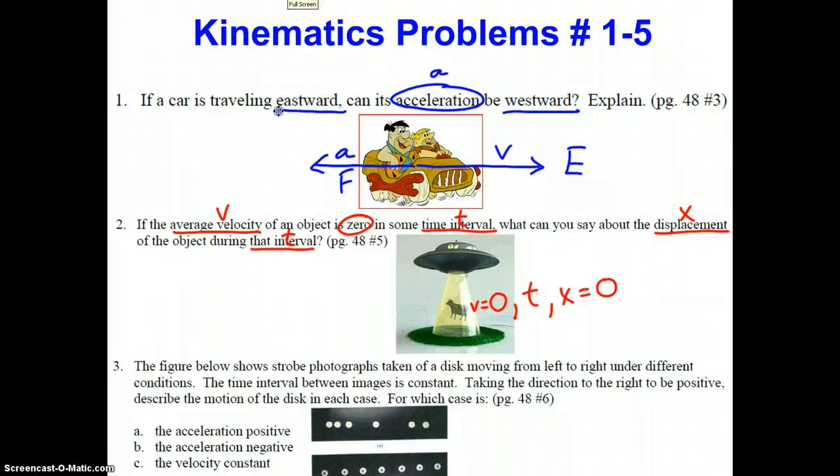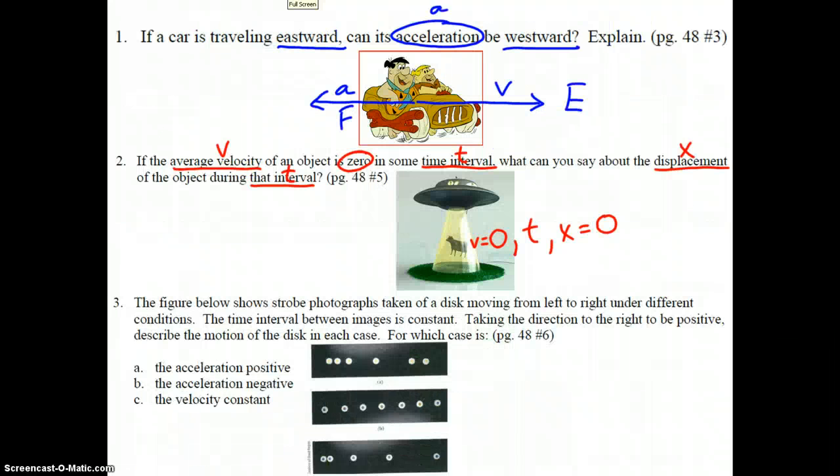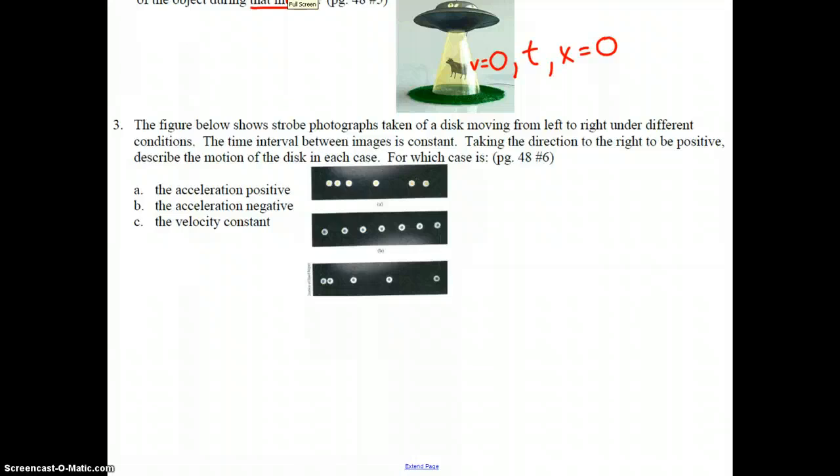Alright, we're going to scroll down here to number three now, and see what we have to deal with here. The figure below shows strobe photographs taken of a disk moving from left to right, so moving from left to right under different conditions. The time interval between the images is constant.